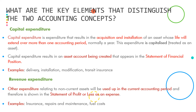The capitalized cost is then depreciated over a period of time. Capital expenditure results in an asset account being created that appears in the statement of financial position - specifically under PP&E, or property plant and equipment, as a non-current asset. Examples of capital expenditure include delivery, installation, modification, or insurance in getting that asset to the place of business. Your answer must provide those key points: acquisition, installation, life extending over more than one accounting period, expenditure is capitalized, a non-current asset account being created appearing in the statement of financial position, and some examples.